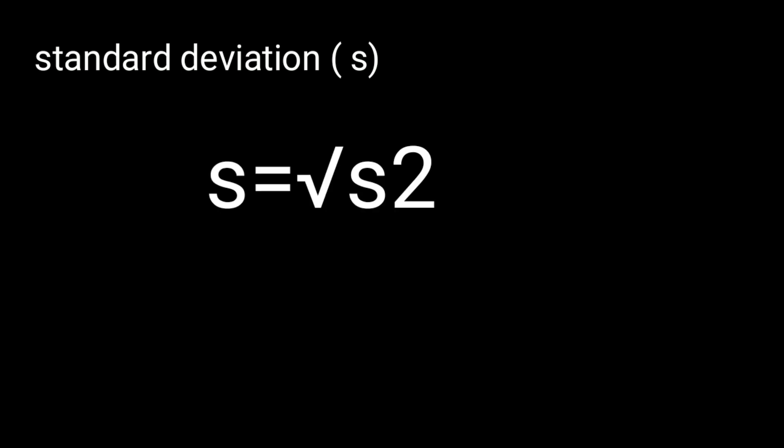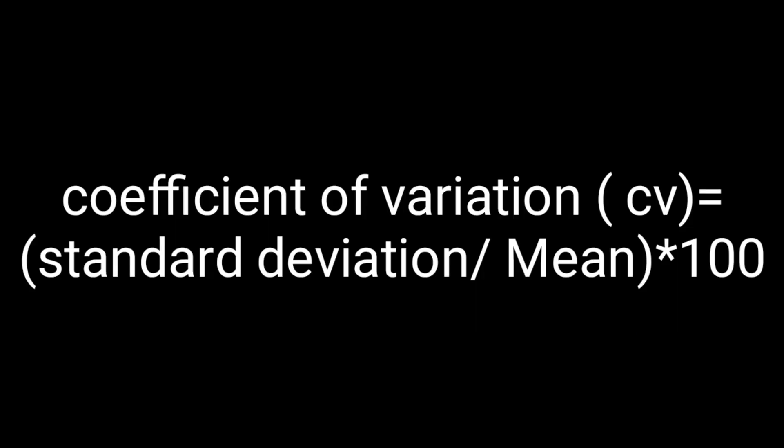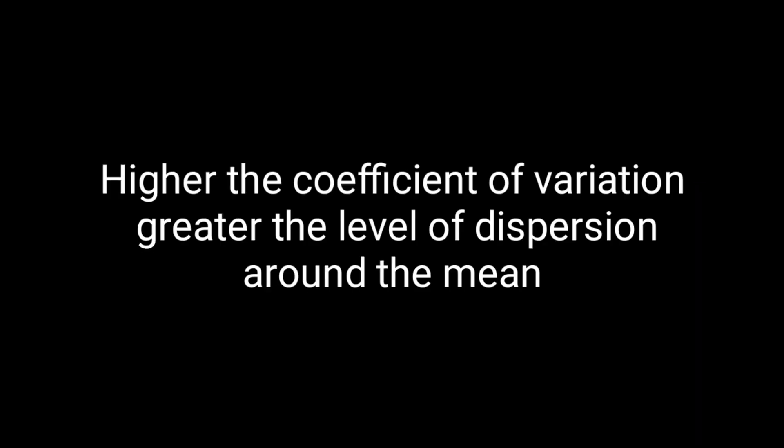Standard deviation, denoted by s, is the square root of the variance: s = √s². It is the positive square root of the sample variance. Using the same sample data set, the standard deviation is 2. The coefficient of variation is calculated by dividing the standard deviation by the mean. A higher coefficient of variation indicates a greater level of dispersion around the mean.